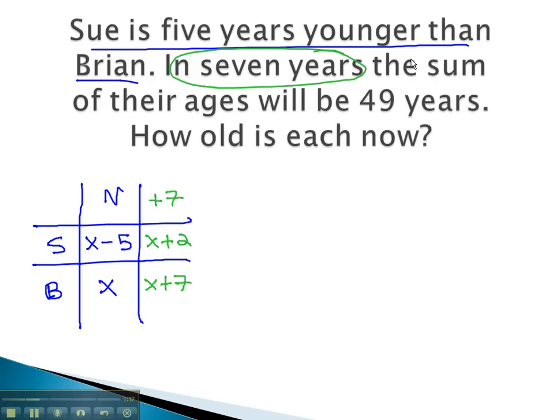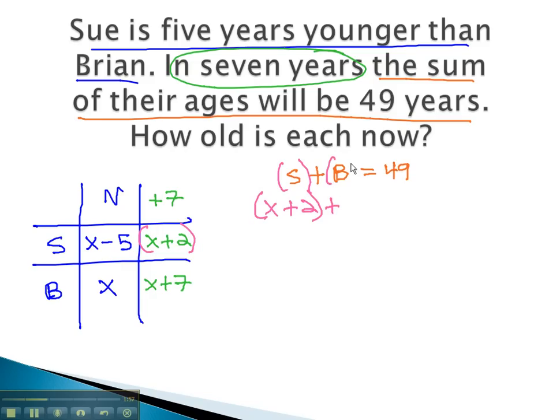Now, we can consider the rest of the sentence. The sum of their ages is 49. This means Sue plus Brian is going to equal 49 years in the future. So we can replace Sue with Sue's information from the future, x plus 2. We can also replace Brian with Brian's information from the future, x plus 7. This equals 49.